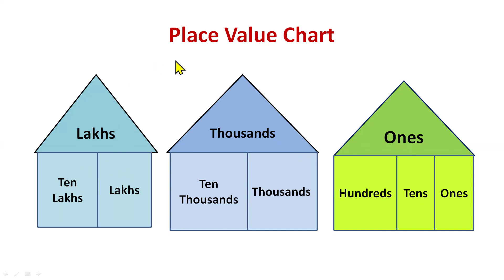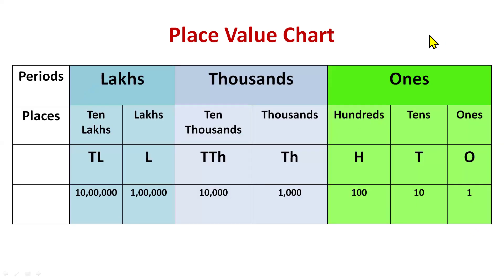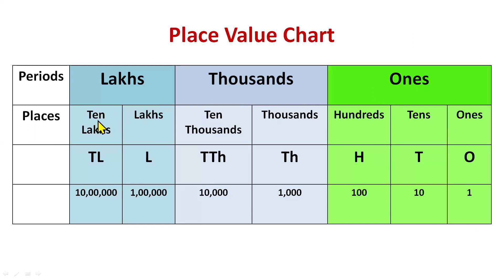In math these houses are called periods. So we have three periods: ones period, thousands period and lakhs period. The members — we name them in math as places. In ones period we have three places: ones, tens, hundreds. In thousands period we have two places: thousands and ten thousands. In lakhs period we have two places: lakhs and ten lakhs. We also have shortcuts for the places.